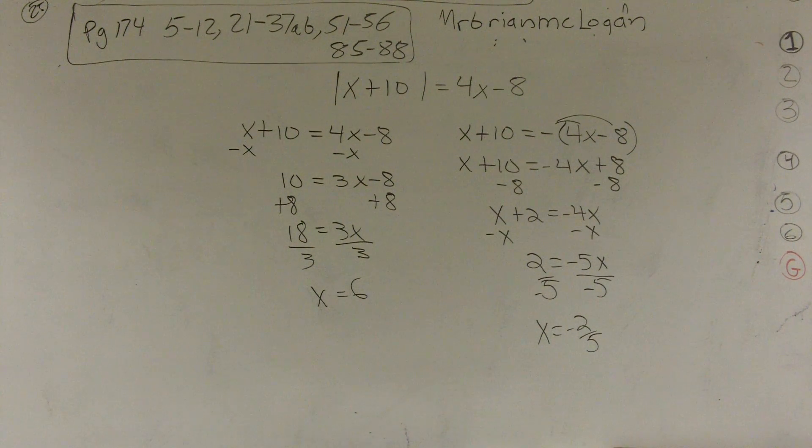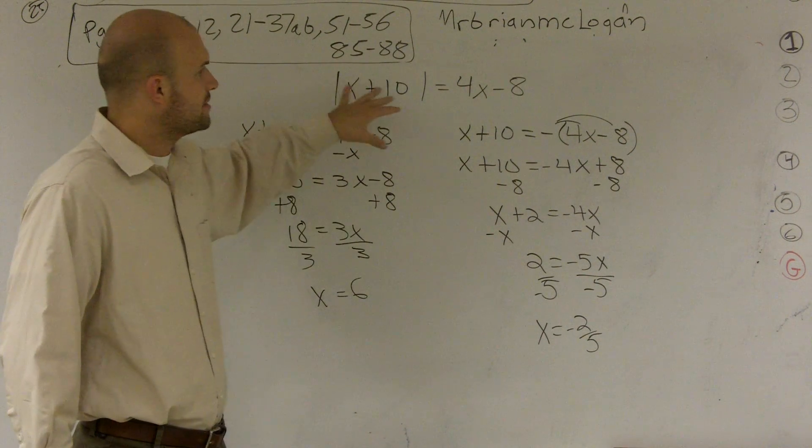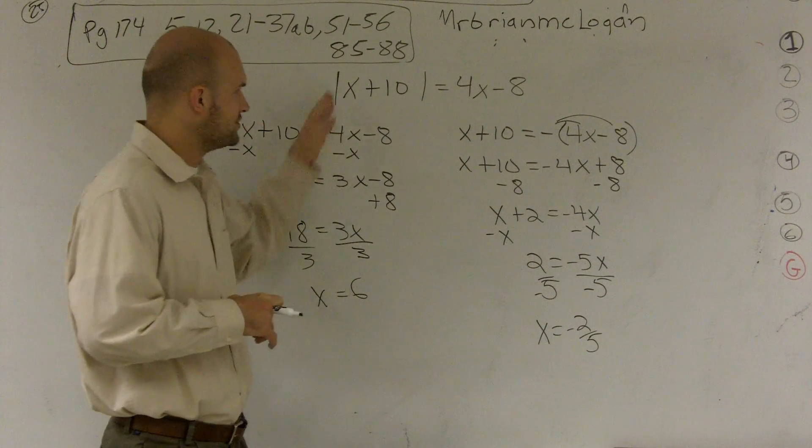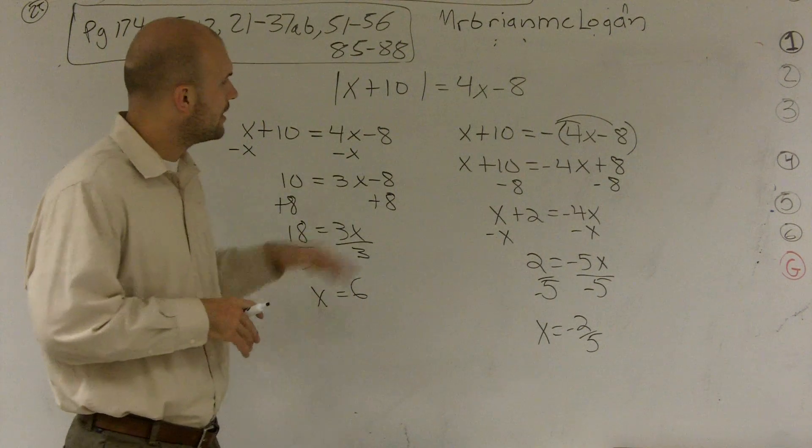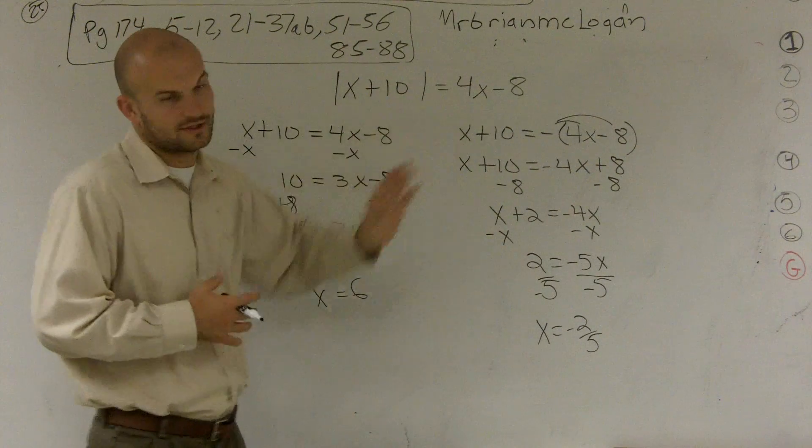And when looking at that problem, so what they're saying is if I plug in 6 and plug in negative 2 fifths, both those would satisfy this absolute value function. You get the exact same answer when plugging them in for the absolute value and the other side.